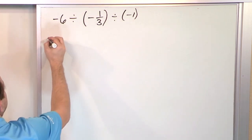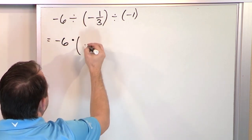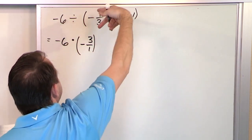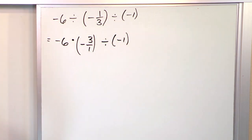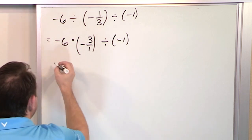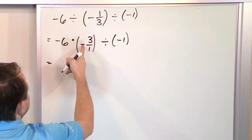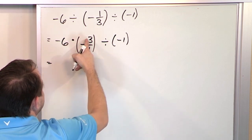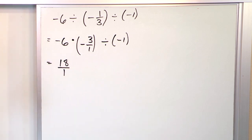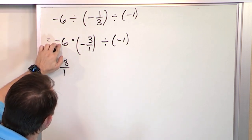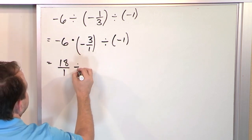So the way we do that is: we have negative 6, and we literally change the division to multiplication. Then this needs to be flipped over, so it becomes negative 3 over 1. We still have to divide by negative 1 at the end. But now this part is multiplied, and to multiply fractions we multiply the tops and the bottoms. Negative 6 times negative 3 is positive 18, and 1 times 1 on the bottom gives you 1. So we get positive 18 over 1, because negative times negative gives positive. Now we're still dividing by negative 1.